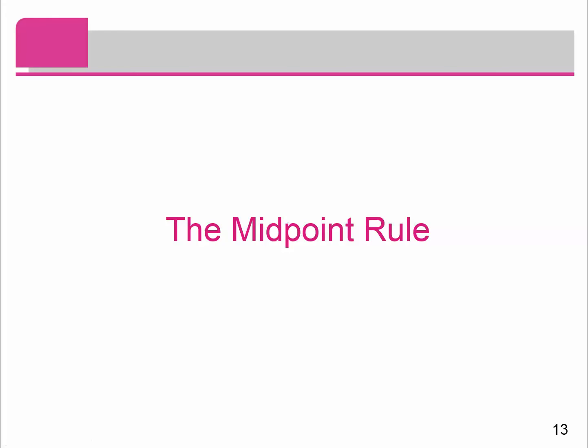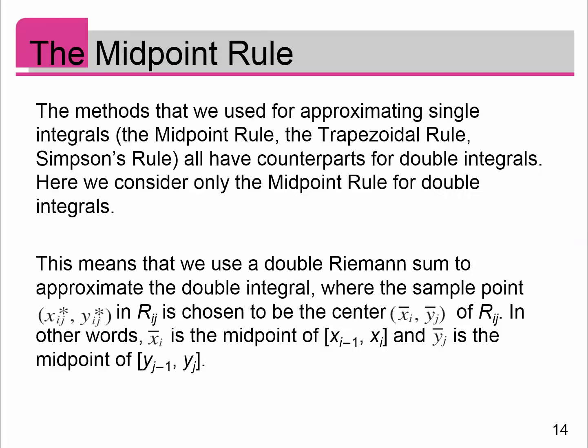So we just did what would be thought of as a right-hand left-hand rectangle rule. The better example for us to consider is something called the midpoint rule. Let's do a little bit of discussion about how we could approximate a double integral using, instead of the upper right corner, the midpoint of each of our rectangles.